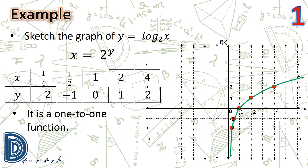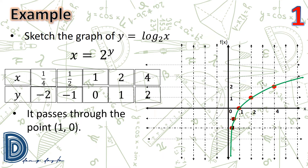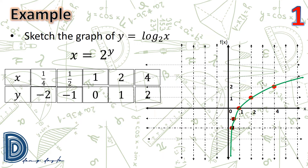If we apply the horizontal line test on the graph of y = log₂(x), the horizontal line will pass through the graph at a single point; therefore, this is a one-to-one function. The graph always passes through the point (1, 0). It has no y-intercept because there is no point where the graph crosses the y-axis — as x approaches 0 from the right, y decreases without bound, so there is no y-intercept.